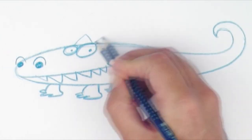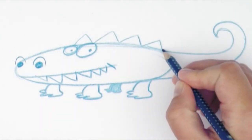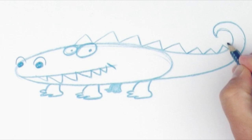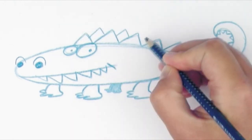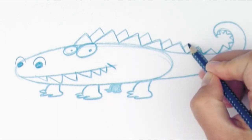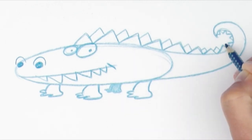Crocodiles have sharp plates all along the back of the body and the tail. That makes them look a bit like dinosaurs. The plates are in two layers. So I'll draw one more behind the first.